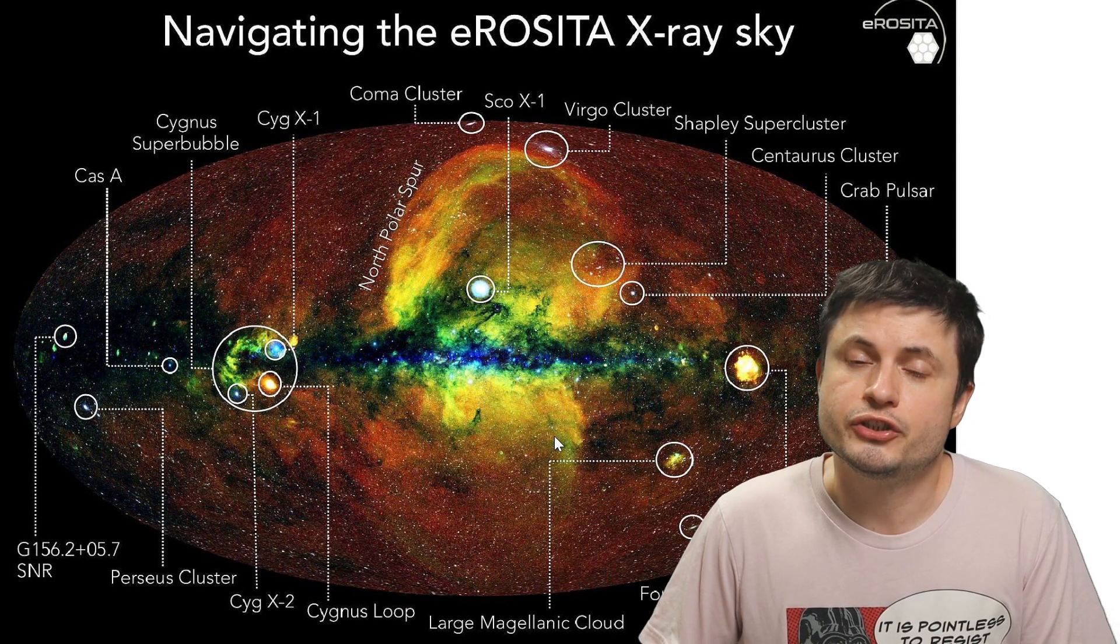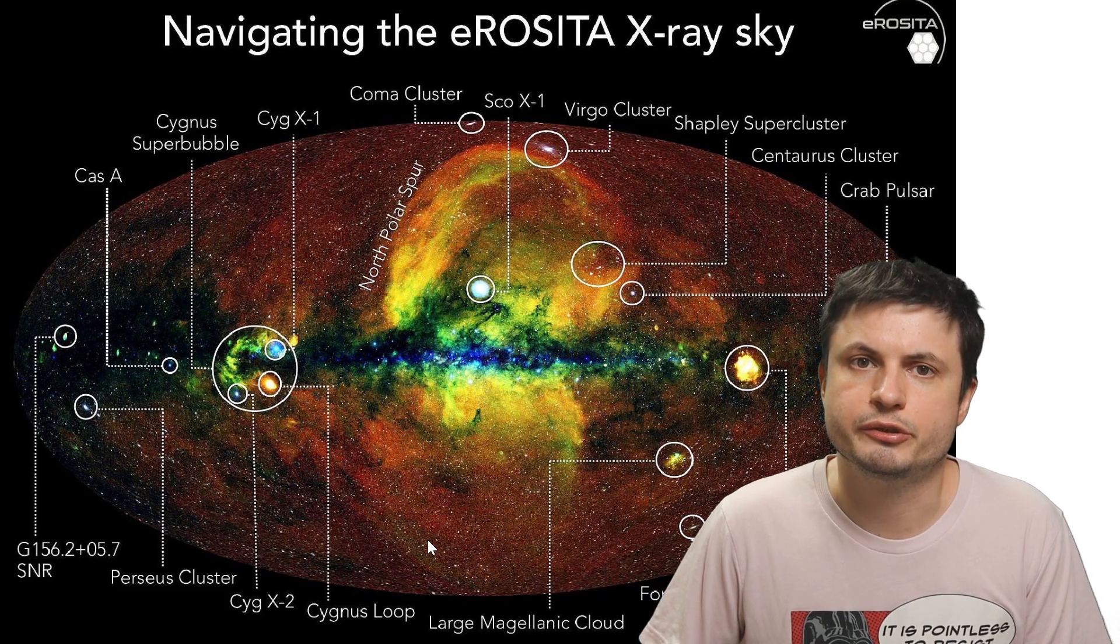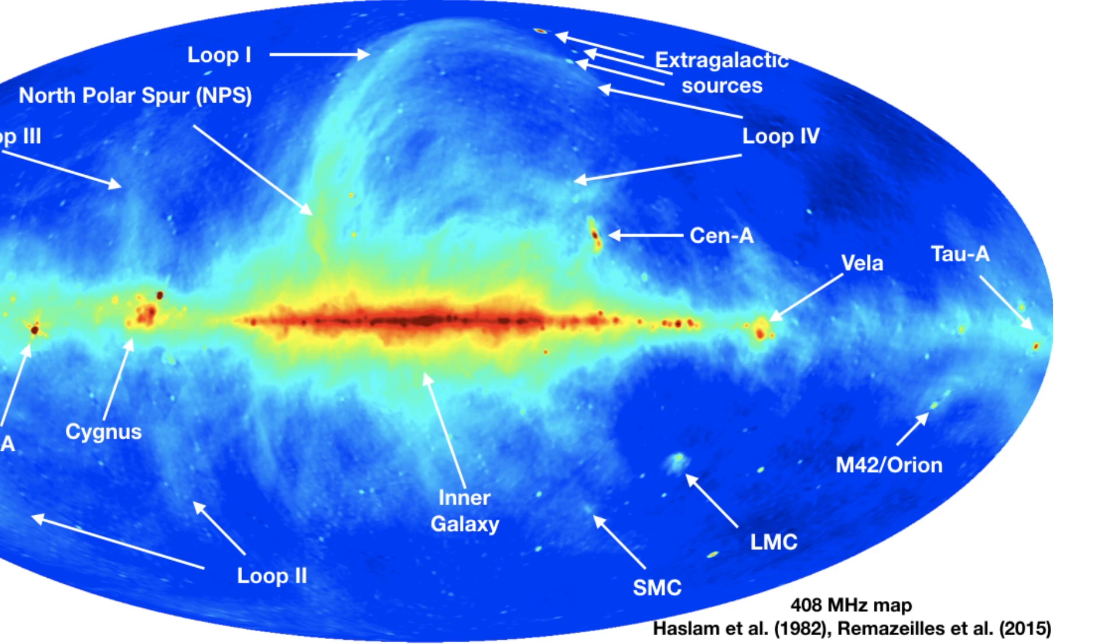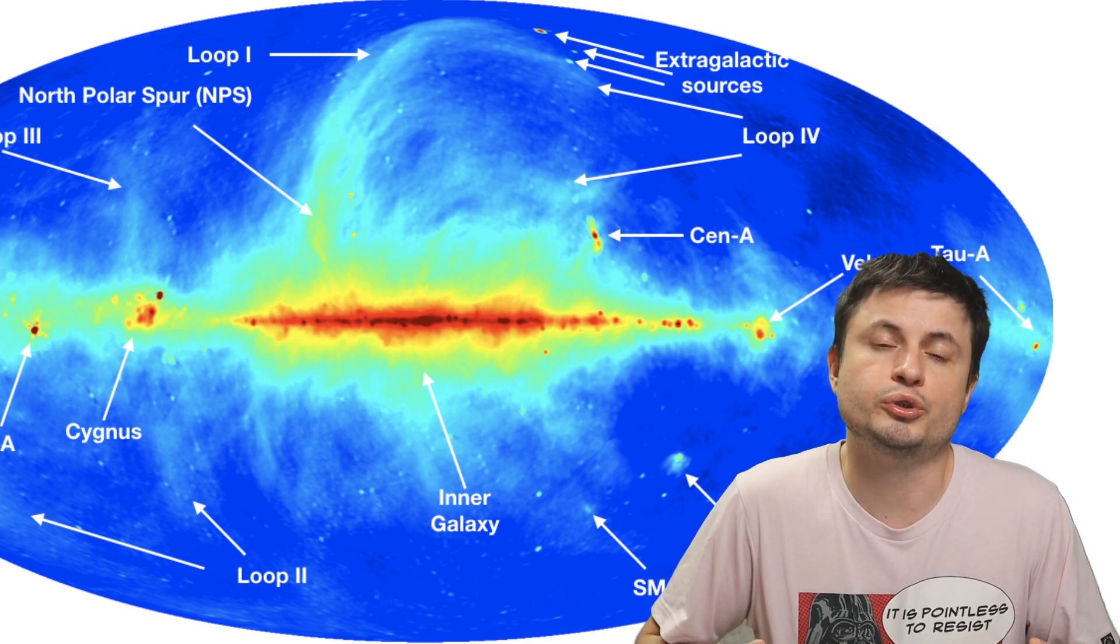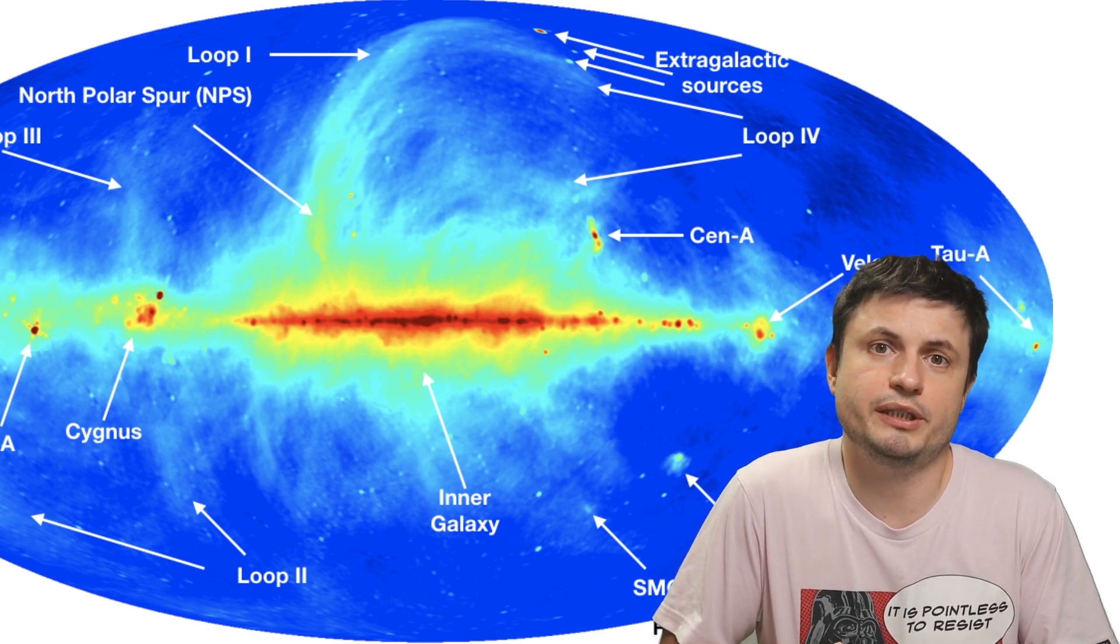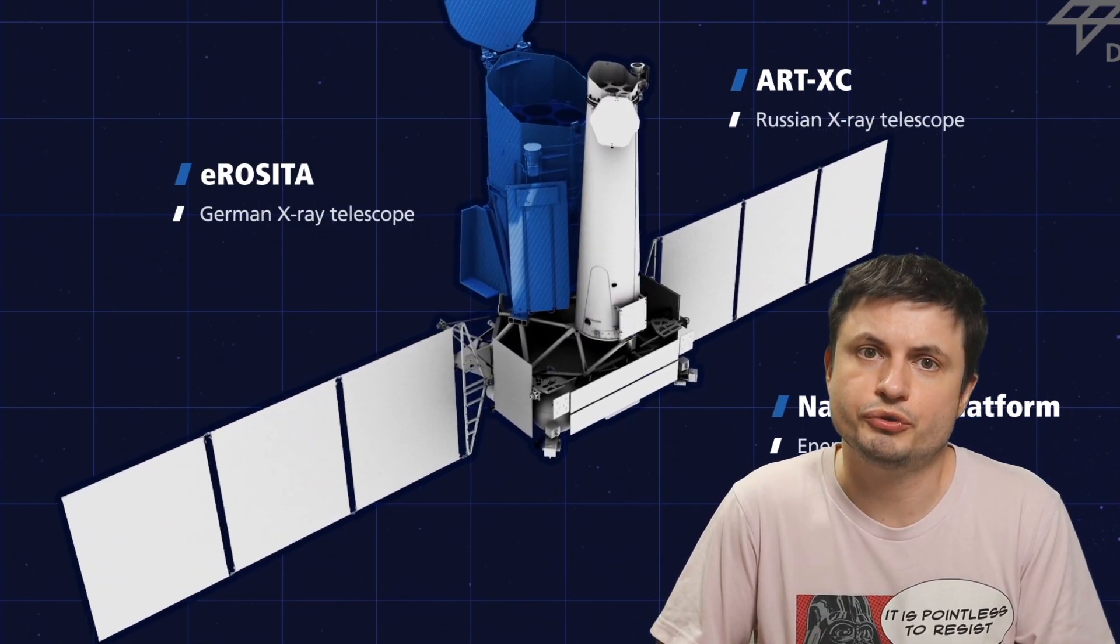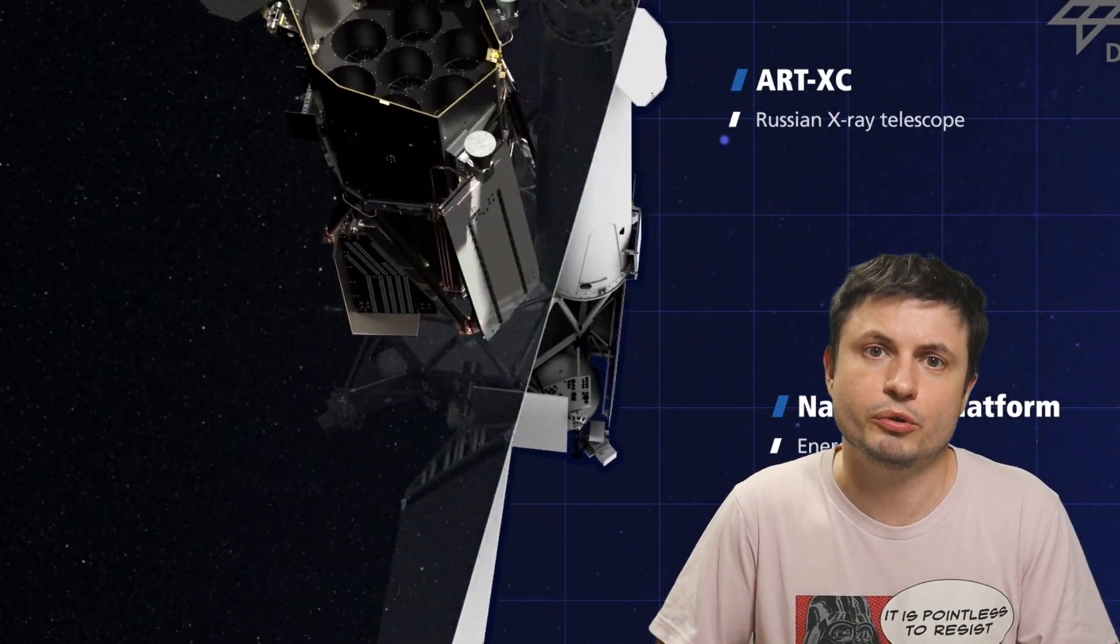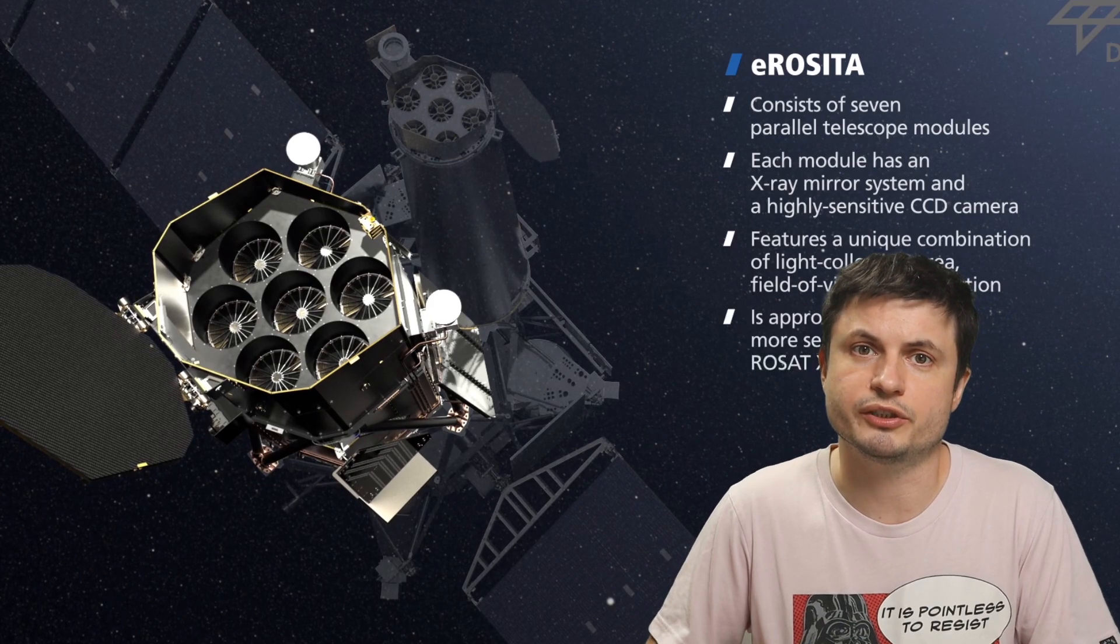But of particular interest to scientists have always been this location that you can kind of see right here known as the North Polar Sphere. Even previous observations and previous analysis suggested that this sphere right here seems to create unusual loop-like formations which may have been a result of some sort of a supernova that created this very large and very unusual x-ray formation. But something still didn't really make sense here and it did seem to be extremely large and way too powerful. And this was obviously a question that only Erosita also known as the Spectra Telescope or Spectra Observatory also known as SRG Observatory could answer and could help us resolve once and for all.